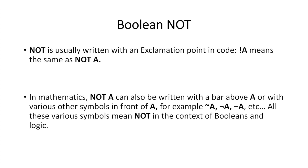So in code, when you're writing computer code, it will be written with an exclamation point. If you write exclamation point A, or exclamation point whatever, in the context of a condition statement in code, it will usually mean NOT. In mathematics, you can also write it with a bar above the A. That's a common way to write it in mathematics. Or you could put a little wavy sign or a little hat symbol. All these various symbols just mean NOT in the context of Boolean logic.